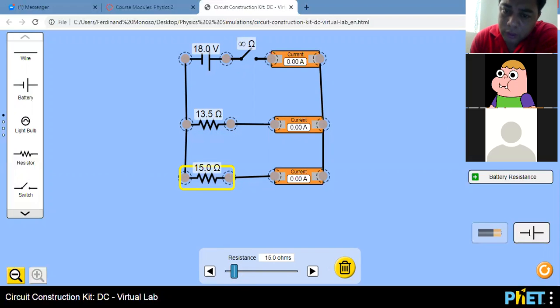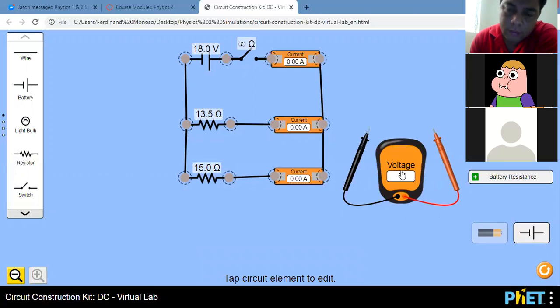Now, to be able to measure our voltage, we need a voltmeter. We will connect our voltmeter later to our circuit. Again, R1 is 13.5, R2 is 15 ohms. And this is our trial one. Our total voltage is 18 volts. And we will now switch on the circuit.